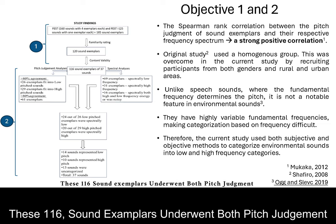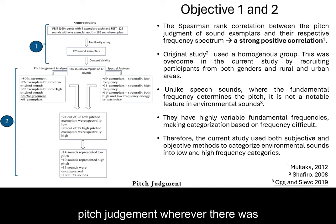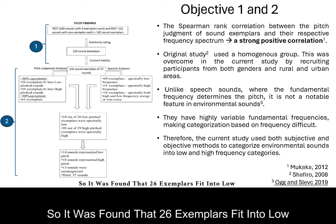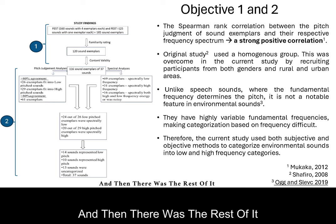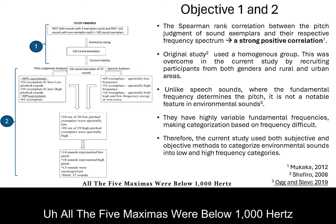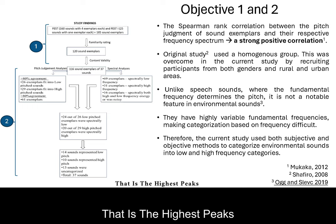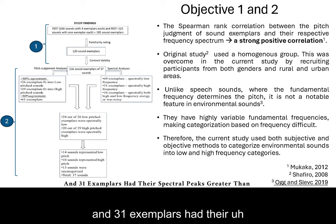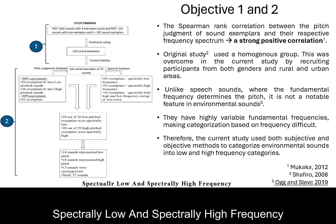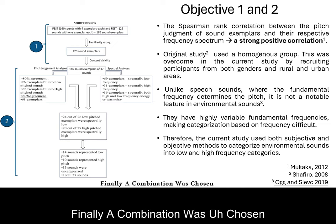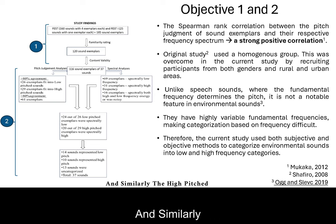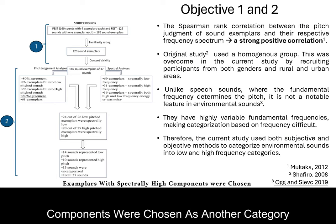All 116 sound exemplars underwent both pitch judgment and spectral analysis. For pitch judgment, sounds with greater than 80% agreement among judges were chosen: 26 exemplars were classified as low pitch and 29 as high pitch, with the remainder having no agreement. For spectral analysis, 69 exemplars had all five maximas below 1000 Hz, and 31 exemplars had spectral peaks greater than 1000 Hz, dividing them into spectrally low and spectrally high frequency groups. A combination was then chosen — sounds that were both low pitched and had spectrally low components, and similarly high-pitched exemplars with spectrally high components.